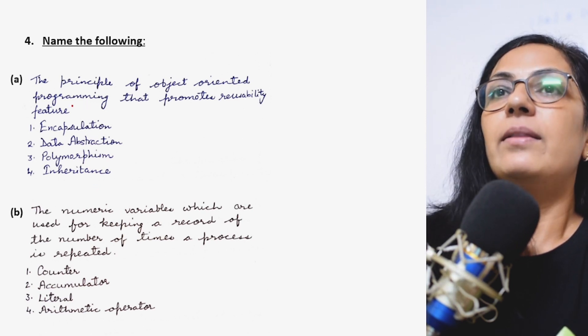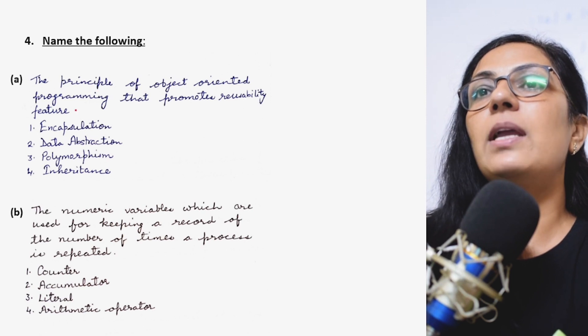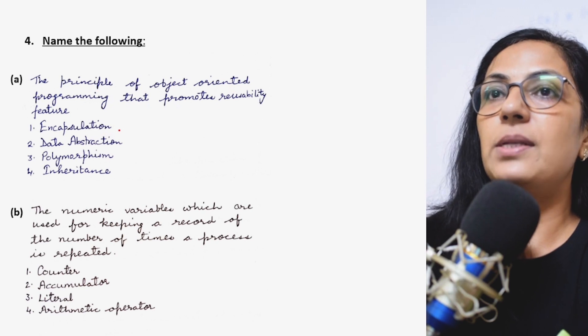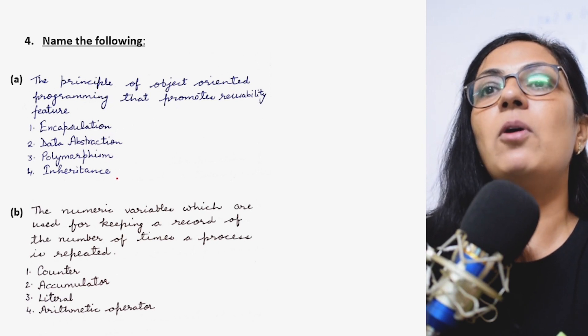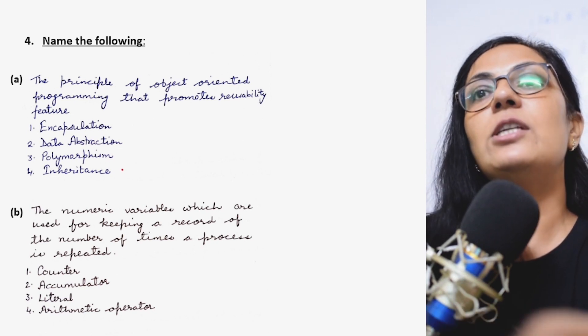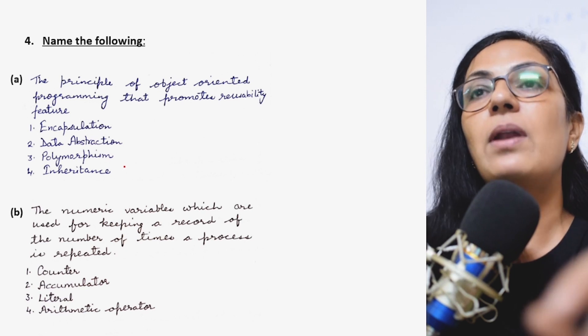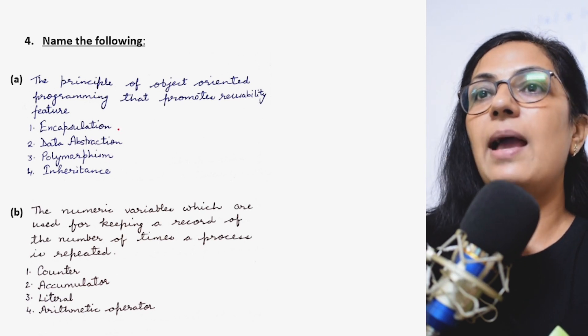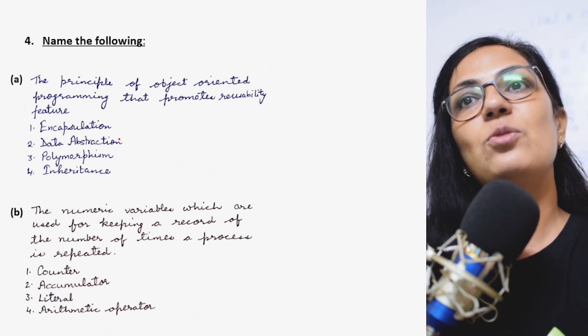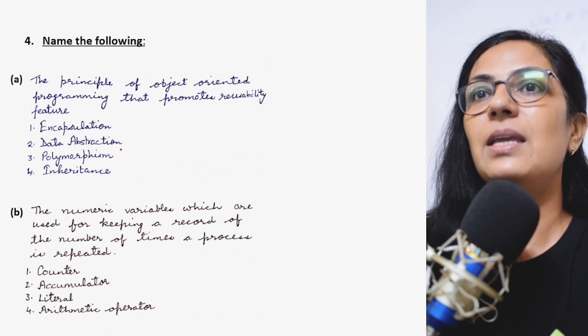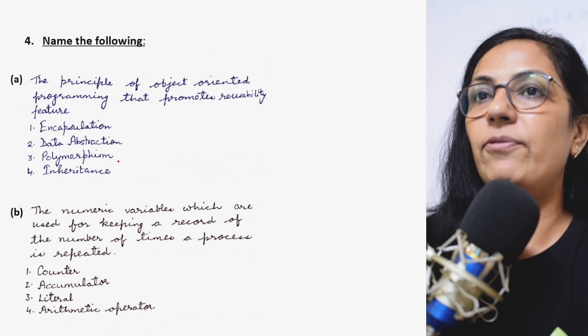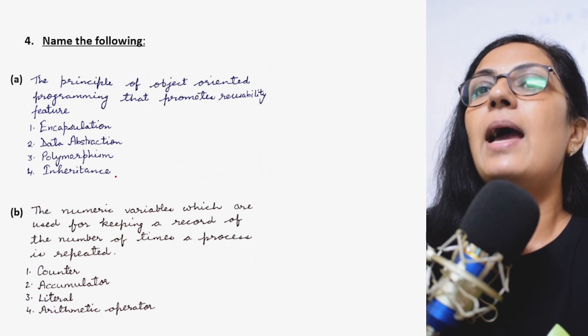Now we move on to the question number 4, that is name the following. The first part is the principle of object-oriented programming that promotes reusability feature. The options are encapsulation, data abstraction, polymorphism and inheritance. Children, always I tell you, you should be knowing the definitions of all these object-oriented programming principles. It is not encapsulation. Encapsulation means wrapping of data and member functions into a single unit, so that is not reusability.